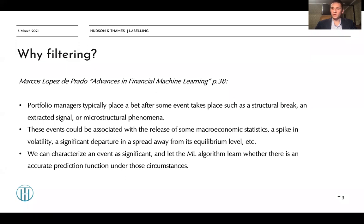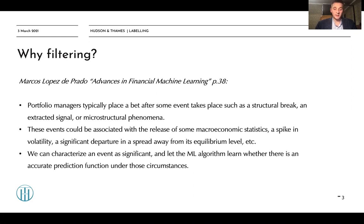Before going to labeling, let's speak about filtering and why it is so important. From the book Advances in Financial Machine Learning by Professor Marcos Lopez de Prado: portfolio managers typically place a bet after some event takes place such as a structural break, an extracted signal, or microstructural phenomena. These events could be associated with the release of macroeconomic statistics, a spike in volatility, or a significant departure in a spread away from its equilibrium level. We can characterize an event as significant and let the machine learning algorithm learn whether there is an accurate prediction function under those circumstances.